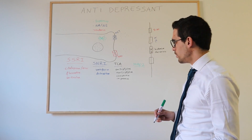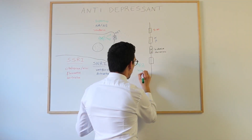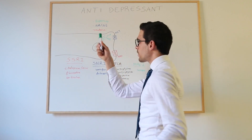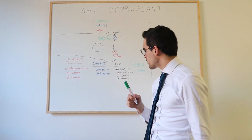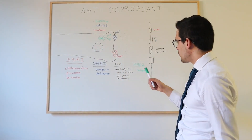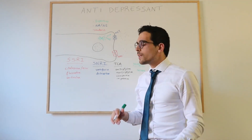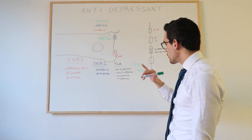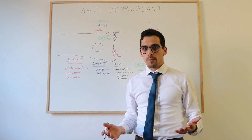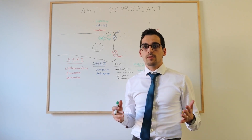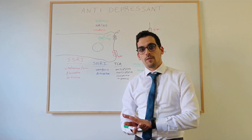Selegiline is an inhibitor of subtype B of monoamine oxidase, which is quite interesting because it selectively prevents the breakdown of dopamine. This means it can be used in Parkinson's disease to help patients, since in Parkinson's disease people have low amounts of dopamine.